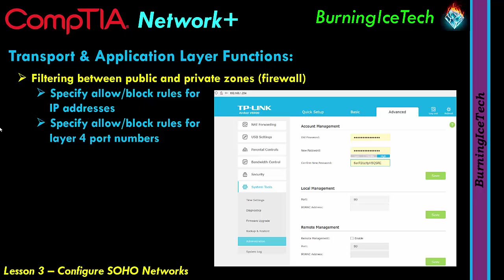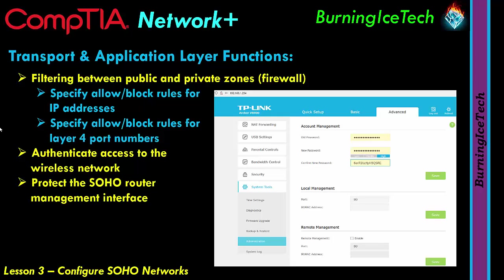You can also block or allow URLs, which are website addresses. You can choose whether people need to authenticate to access your wireless network — essentially putting a password on your Wi-Fi. Depending on your router brand and model, it might be called your Wi-Fi password or SSID password. You can also protect the SOHO router management interface, which was covered in the A+ course.